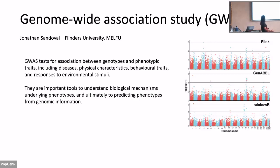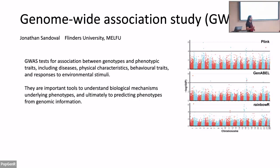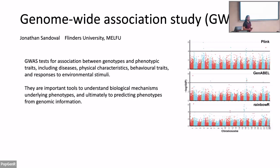I guess everyone knows what Genome-Wide Association Studies are, but just to remind you: it's trying to look for correlations between phenotypes and genotypes, especially for very complex traits — this can be disease, behavior, or even environmental response to stimulus. These tools are not just for medical science or agriculture; they can be very important for biologists as tools to disentangle biological mechanisms that affect the phenotype, and ultimately they allow predicting phenotypes from genotypes.